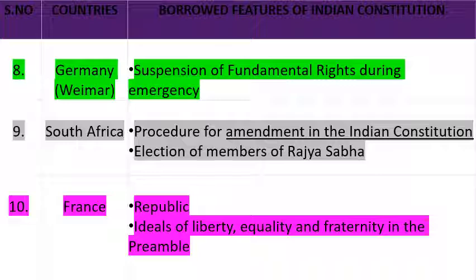Next है South Africa। South Africa से लिया गया है Procedure of Amendment in the Indian Constitution — कि भारतीय संविधान में अगर amendment करना हो, तो किस procedure को follow करना होगा। Article 368 में यह बताया गया है। Next है Election of Members of Rajya Sabha — जो Rajya Sabha के members हैं, उनका election process भी South Africa से लिया गया है।